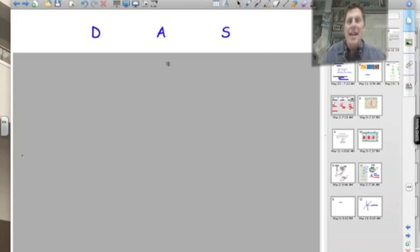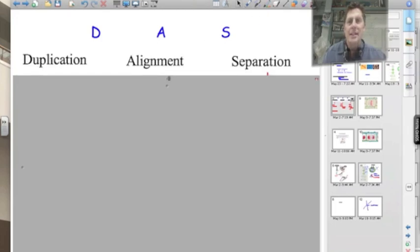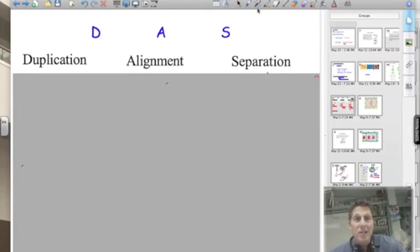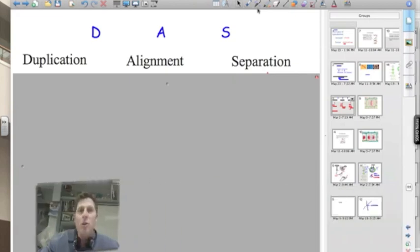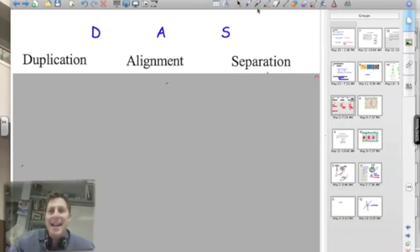We're going to go through this process of duplication, alignment, and separation. What is the most important thing we must duplicate? The most important thing is DNA, the information. So we're going to duplicate the information. We duplicate DNA.